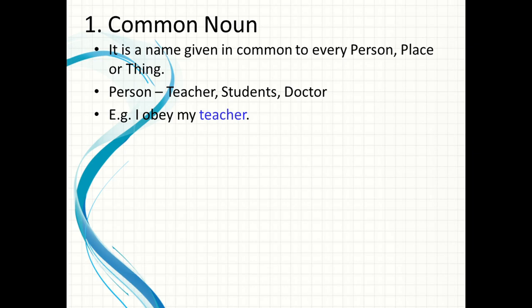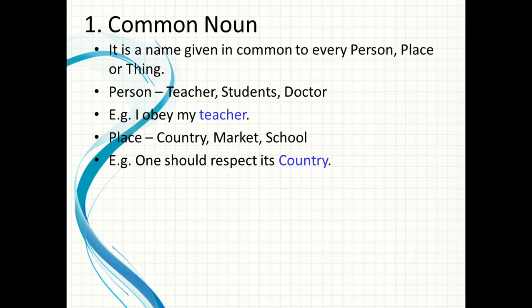For example, 'I obey my teacher' — main apne teacher ko obey kerta hoon. It is not clear ke hum kis particular teacher ke baare mein baat kar rahe hain. We are talking commonly about all the teachers, so teacher is a common noun. Similarly, country, market, school are common names given to places.